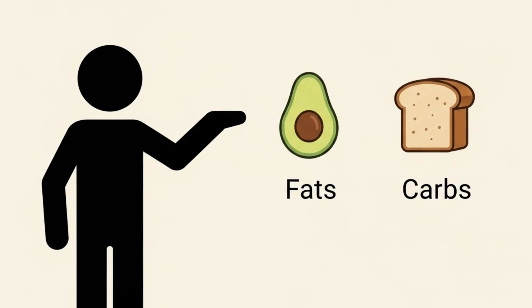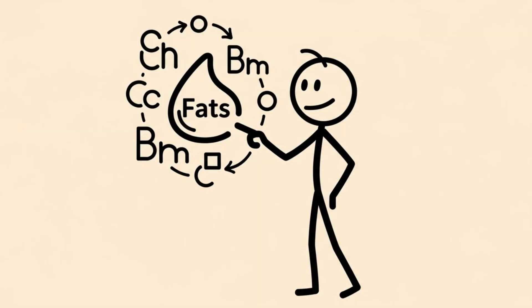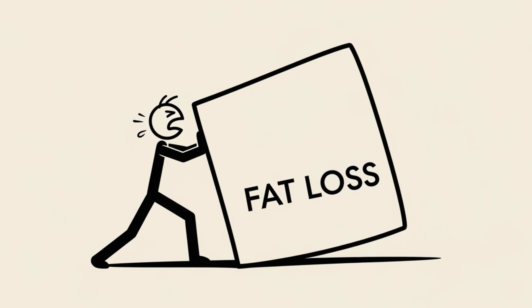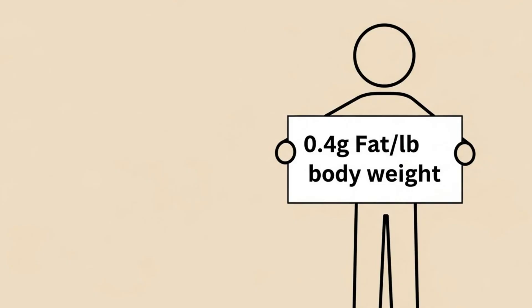Moving on to fats and carbs. Do not demonize them. You need fats for hormonal regulation. If your fat intake drops too low, your testosterone and estrogen levels crash, which makes fat loss harder. Aim for about 0.4 grams of fat per pound of body weight.